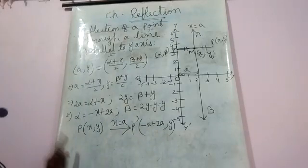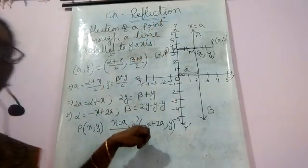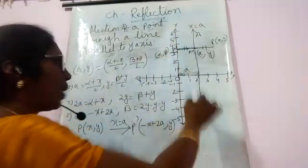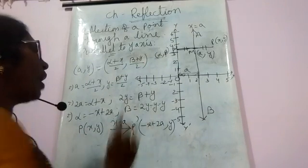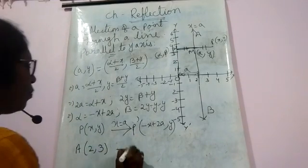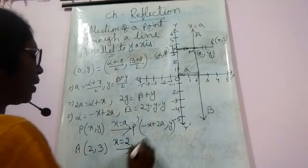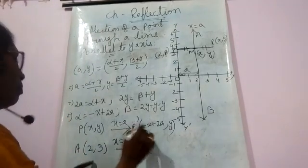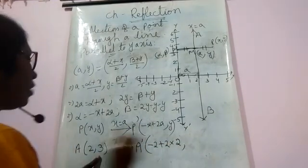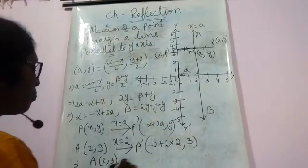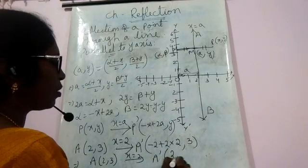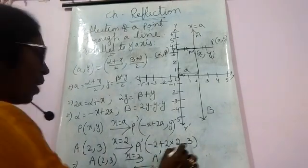You have already learned that when a point reflects through the y-axis, its x-coordinate changes sign. In the same way, when a point reflects through a line parallel to the y-axis, its x-coordinate becomes -x + 2a and the y-coordinate remains the same. For example, A(2, 3) reflecting through x = 2: x-coordinate becomes -2 + 2(2) = -2 + 4 = 2, and y-coordinate stays 3. So A'(2, 3).